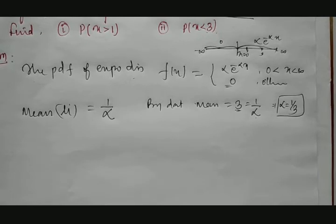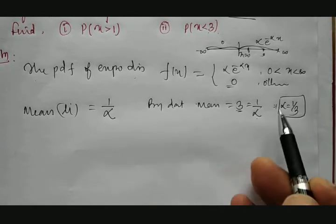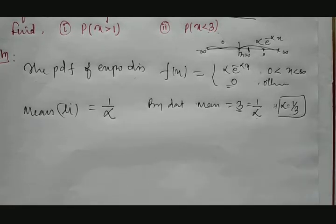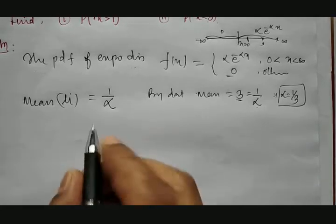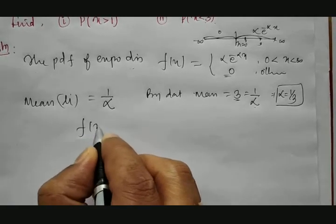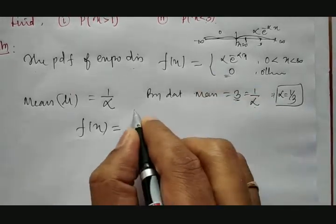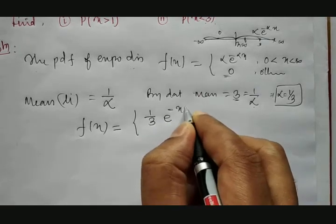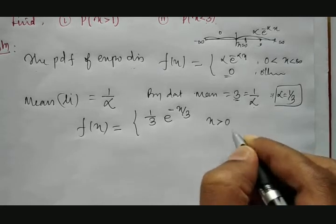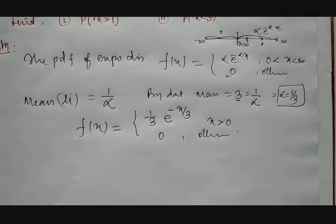Since mean and standard deviation in exponential probability distribution remain the same, the standard deviation is also 1/3. Therefore f(x) with α = 1/3 becomes: f(x) = (1/3) · e^(−x/3) for x between 0 to infinity, and 0 otherwise.